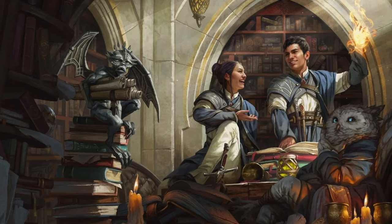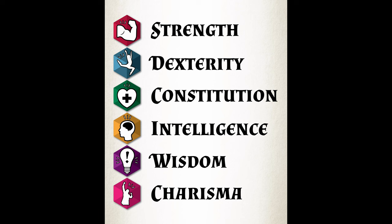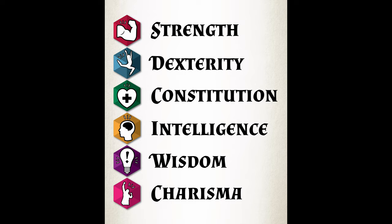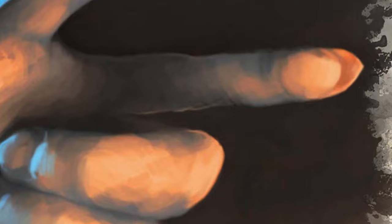Now let's delve into the concept of ability scores in the AVAN system. We've retained the traditional 6 abilities that are characteristic of all previous D&D and Pathfinder editions: Strength, Dexterity, Constitution, Intelligence, Wisdom, and Charisma. However, Charisma has been renamed Presence. And in the AVAN rules, we introduce a 7th ability, Luck.